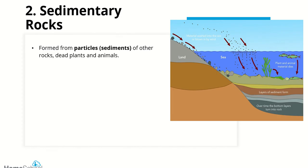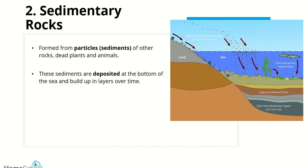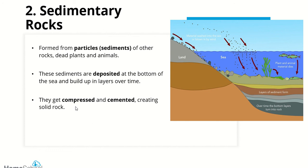Sedimentary rocks are formed from particles of other rocks, dead plants, and animals. These sediments are deposited — simply dropped — on the ocean floor, where they build up in layers over time and get compressed and cemented together. Compressed means squashed; cemented means stuck together. Over time these layers form rock. If you look at a cross section of limestone you can actually see each individual layer. Examples of sedimentary rock are sandstone and limestone.